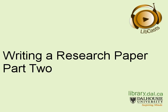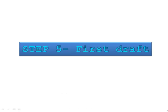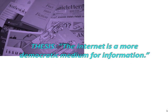Welcome to part two of the research paper tutorial. There are only four steps left in the research paper process: drafting, revision, proofreading, and references. Once you've made some notes and built an outline, you'll find it easy to begin step five, writing a first draft. Let's begin.